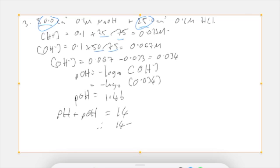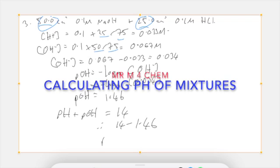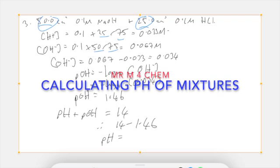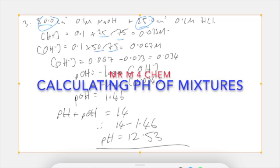pH plus pOH is 14, so 14 minus 1.46 gives us a pH for the final answer of, well done, 12.53.